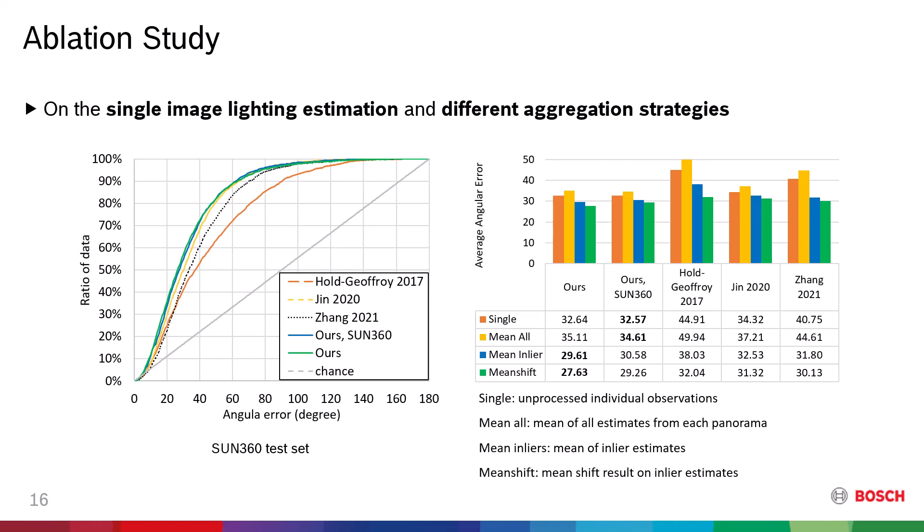The performance gain of the spatial aggregation process is further analyzed on the Sun360 test set. The graph on the left side shows the cumulative angular error graph for the raw observations and on the right side compares the results for three lighting estimation methods with four different aggregation strategies. The average angular error of each method is decreased after applying the proposed spatial aggregation. These results demonstrate our method's generality showing that it can increase the accuracy of any lighting estimation method.